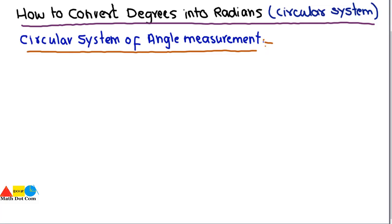In our previous lectures we have seen how to convert an angle in decimal degrees to the sexagesimal system, that is degrees, minutes, and seconds. But today we are going to learn a new system of angle measurement — the circular system — in which the angle is measured in radians. Let's have a short overview of the circular system of angle measurement.